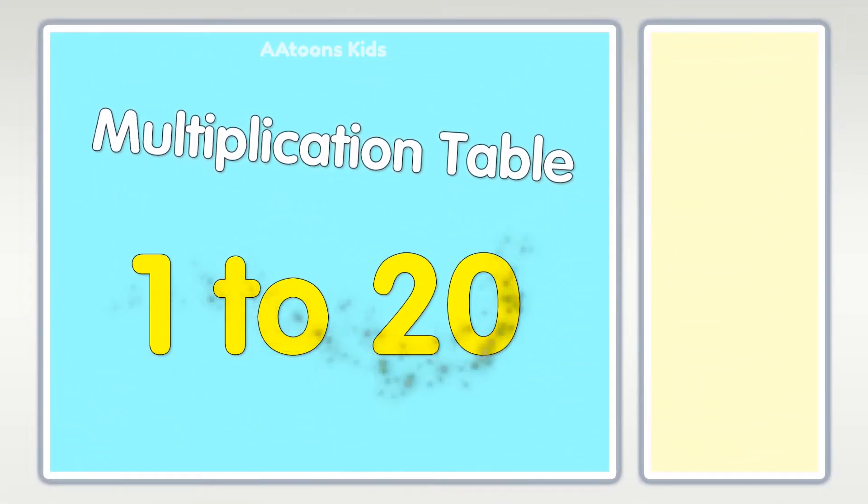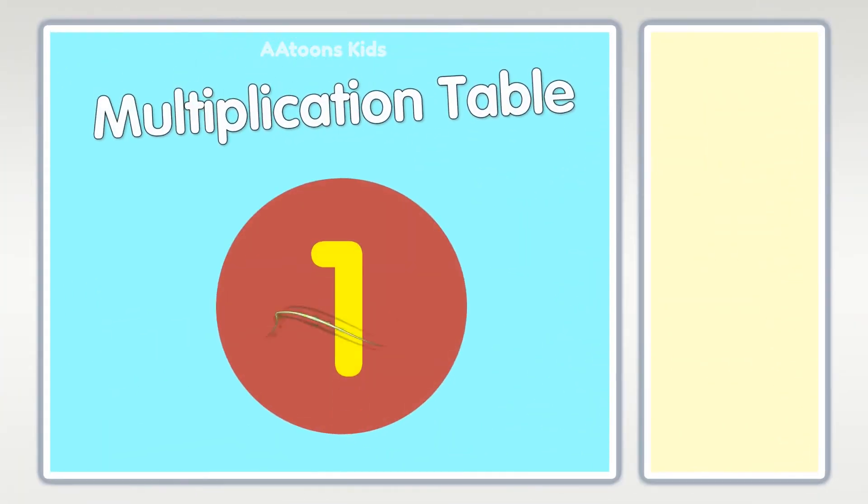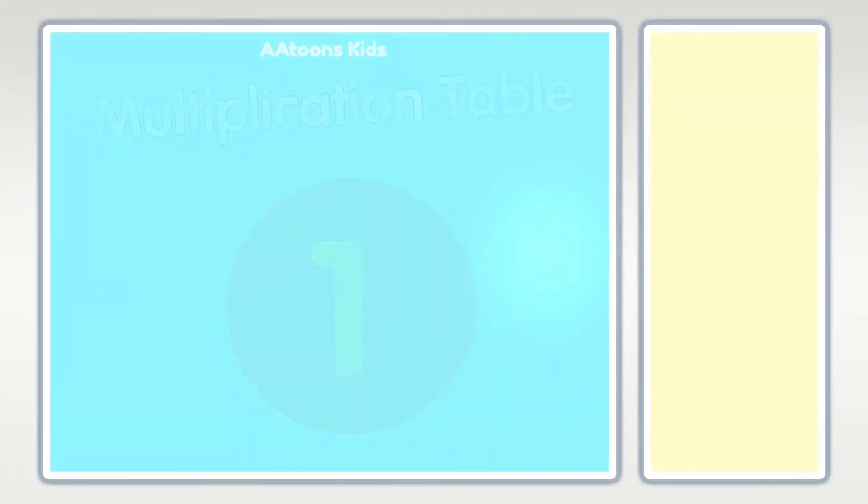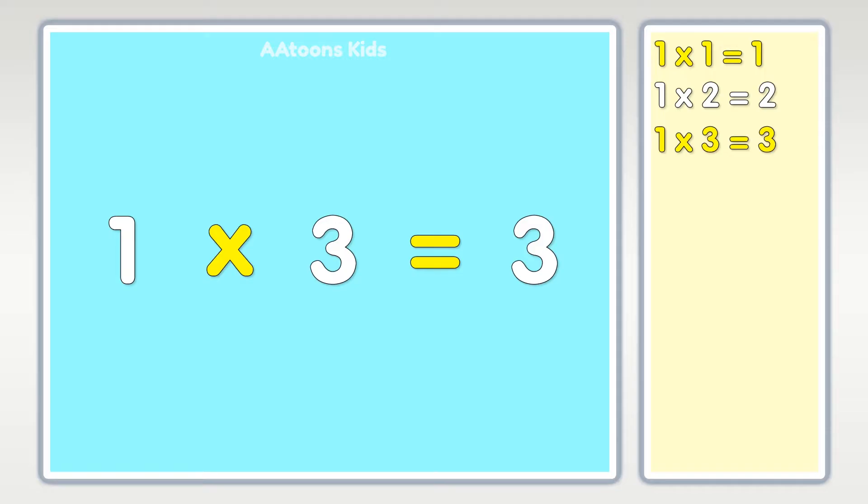Multiplication table, table of one: one times one is one, one times two is two, one times three is three, one times four is four.